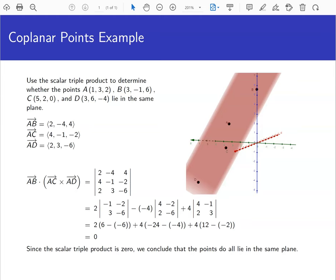We're asked to use the scalar triple product to determine whether the points A(1, 3, 2), B(3, -1, 6), C(5, 2, 0), and D(3, 6, -4) lie in the same plane.